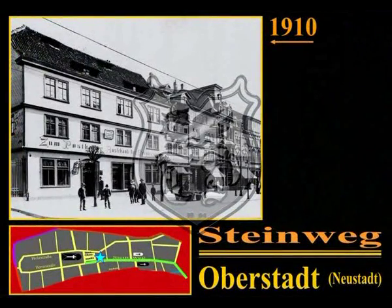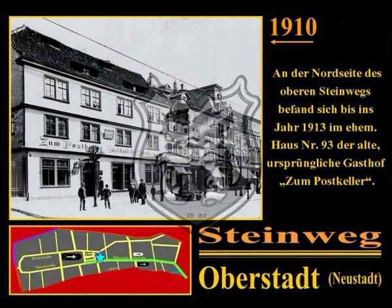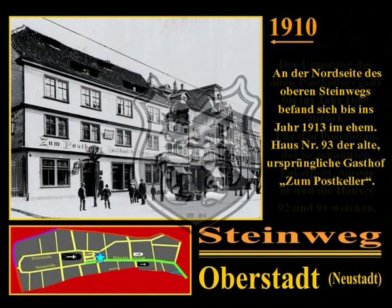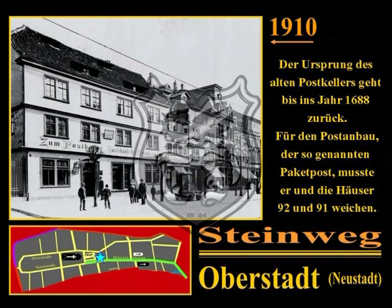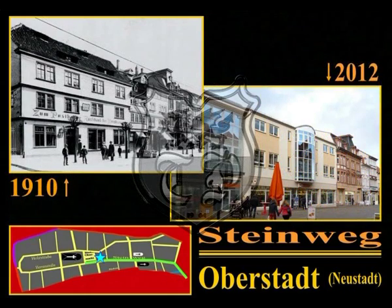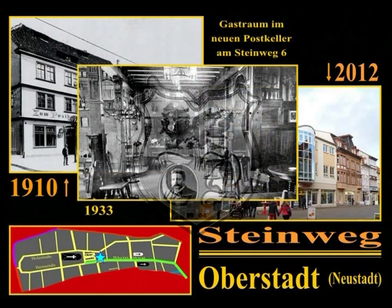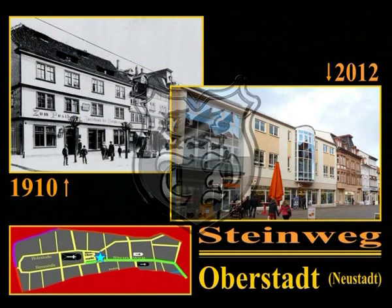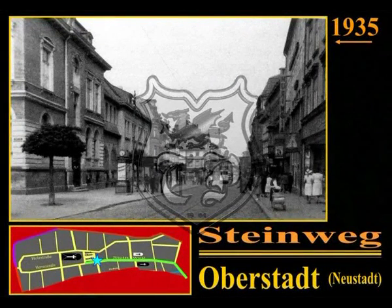An der Nordseite des oberen Steinwegs befand sich bis ins Jahr 1913 im ehemaligen Haus 93 der alte Gasthof zum Postkeller; der Ursprung des Postkellers geht bis ins Jahr 1688 zurück. Für den Postanbau, die sogenannte Paketpost, musste er und die Häuser 92 und 91 weichen. Seither ist der Postkeller auf der gegenüberliegenden Straßenseite am Steinweg 6 zu finden. Da in den 1990er Jahren auch die alte Paketpost wieder abgerissen wurde, bietet sich heute vom oberen Steinweg ein ganz anderes Bild.